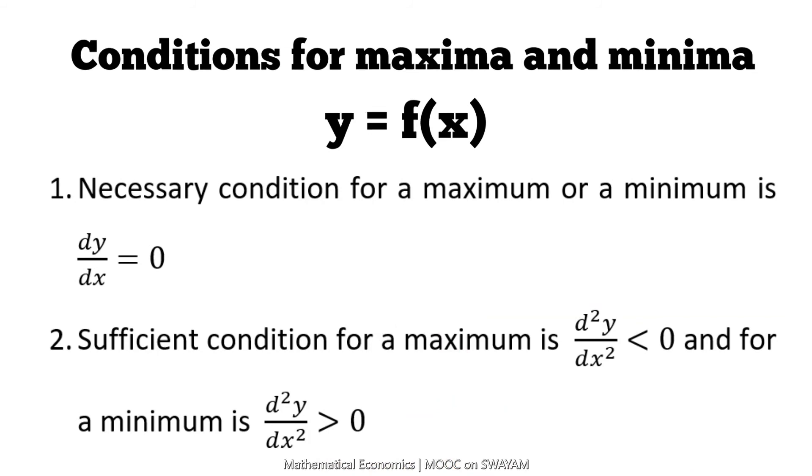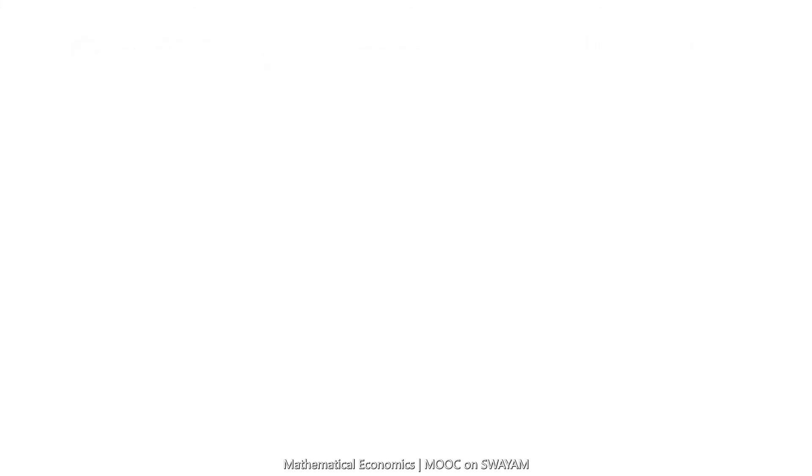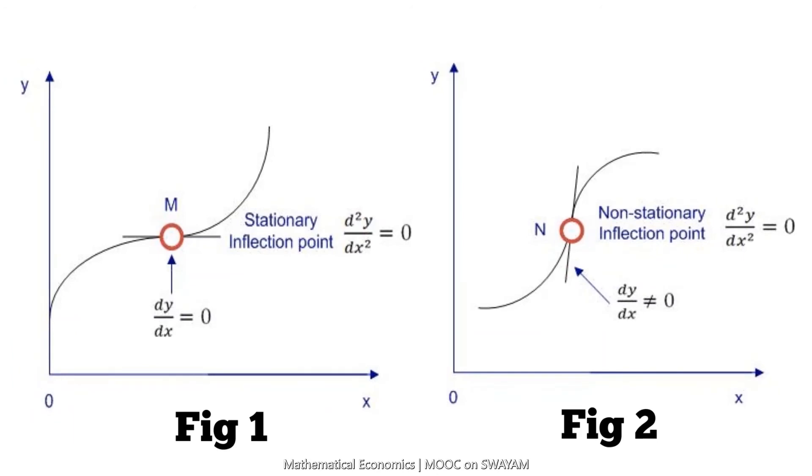There are two interesting cases in this process. Observe the two figures. In figure 1, both the first and second derivative are equal to 0. Such a case is known as a stationary inflection point.